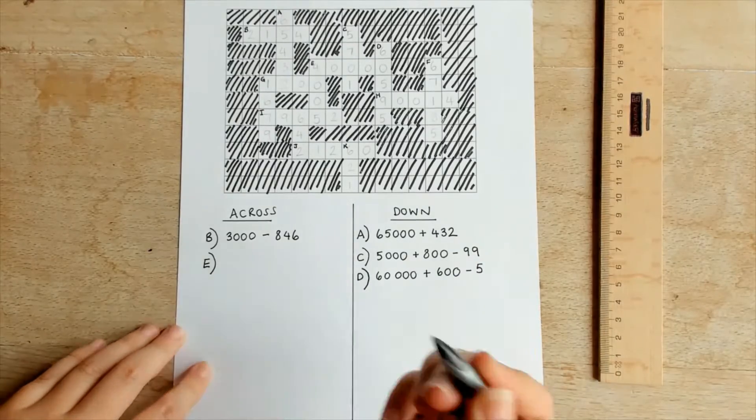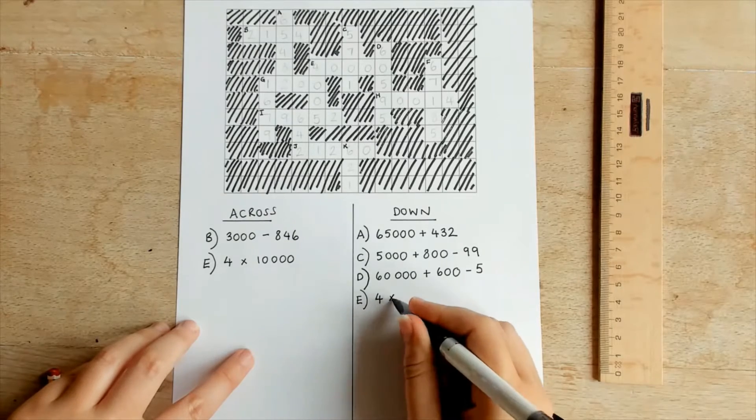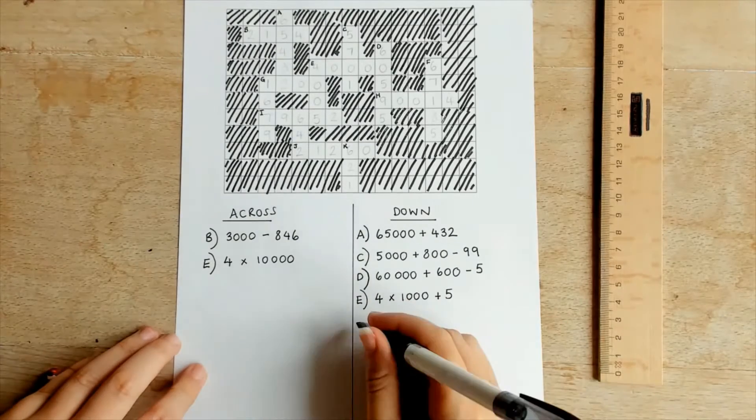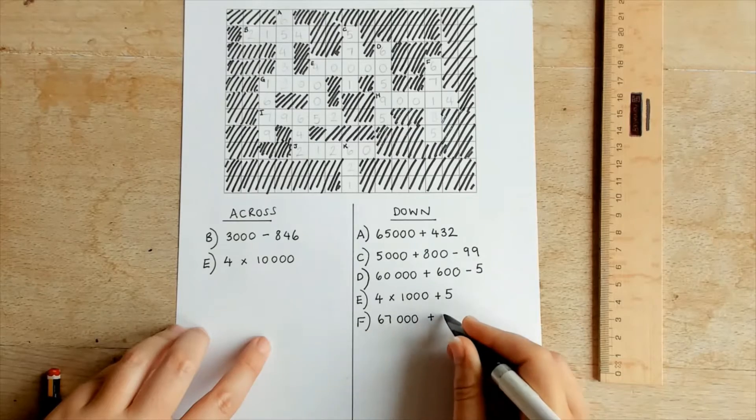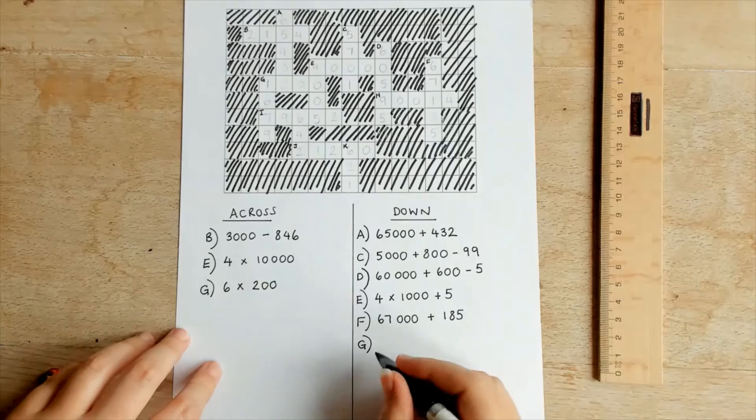The clue should be arranged into across and down clues so start by writing these columns. Learners should start with clue A. Applying their maths knowledge children should write their calculations checking they generate the correct answers to fit the cross number puzzle.